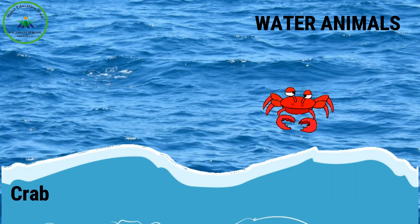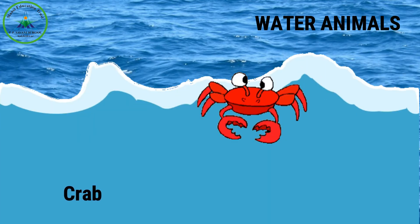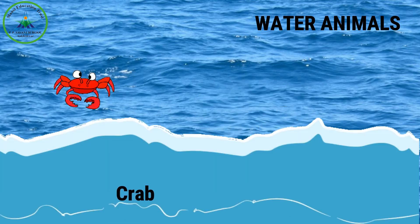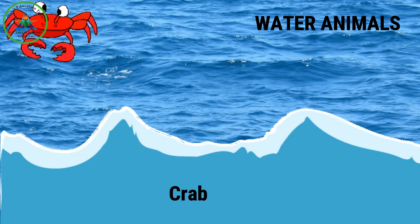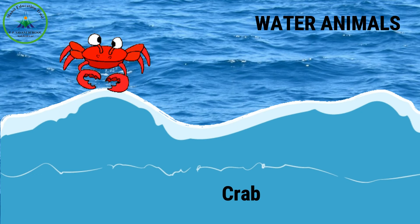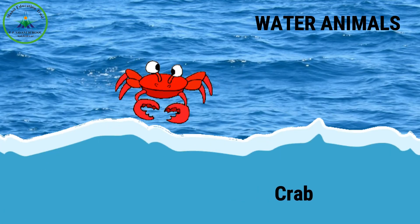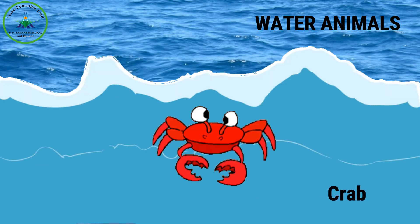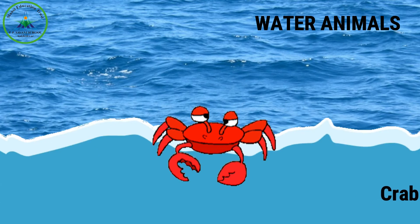This is a crab. C for crab. Kids, crabs can live in water that is warm or icy, deep or shallow.